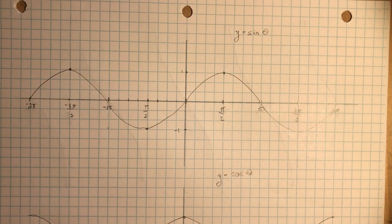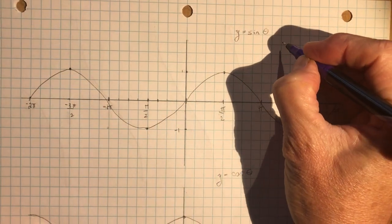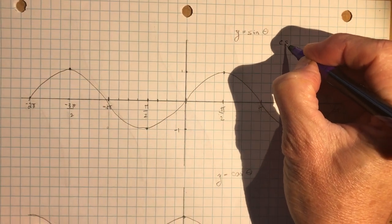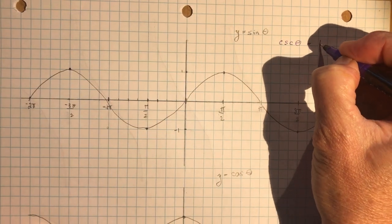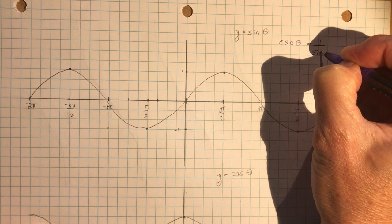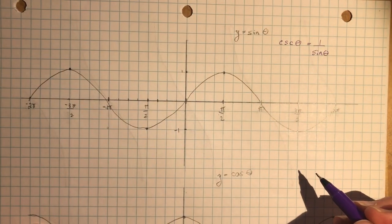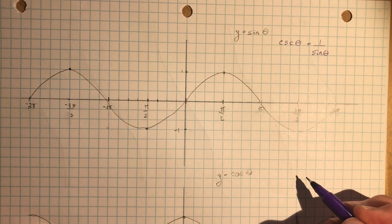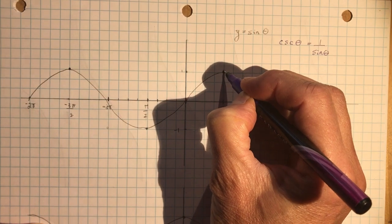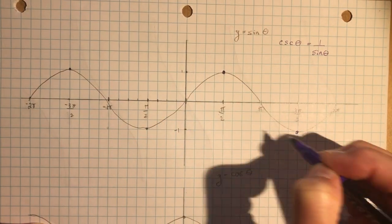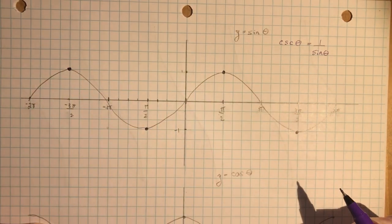Remember, reciprocal just means one over. So when we're doing the reciprocal of the sine function, we're actually doing cosecant theta — don't forget to change the letters, S goes to C. Cosecant theta is one over sine theta. Every point where we have a one or a negative one, one over those are still going to be the points on the reciprocal function.